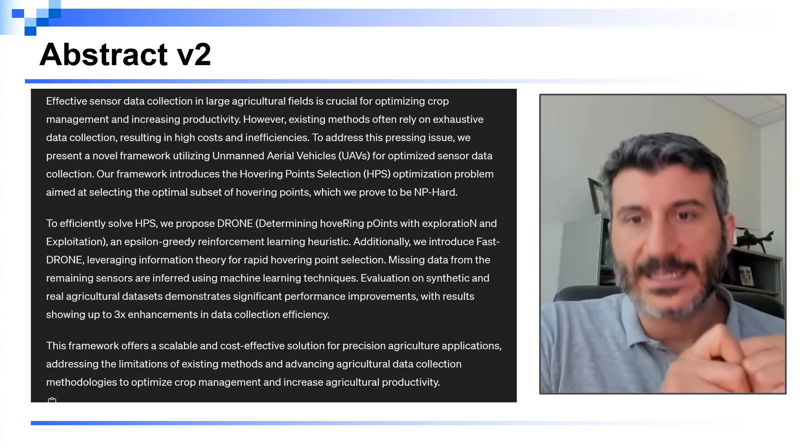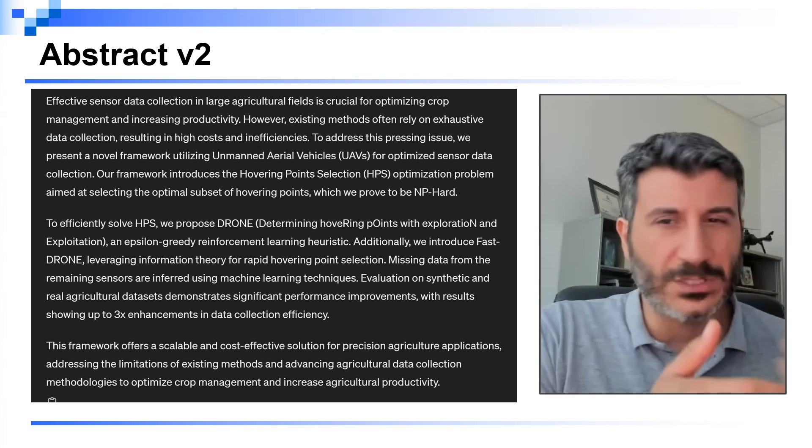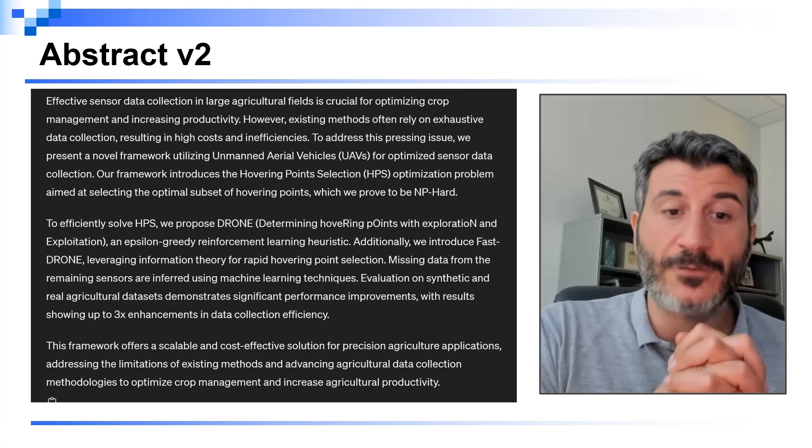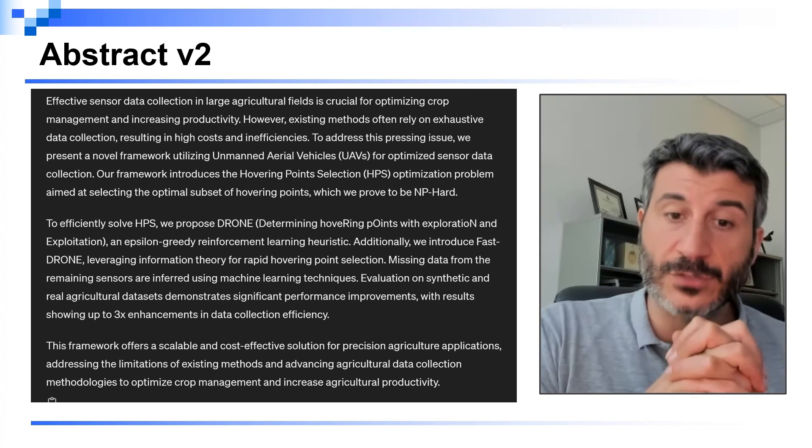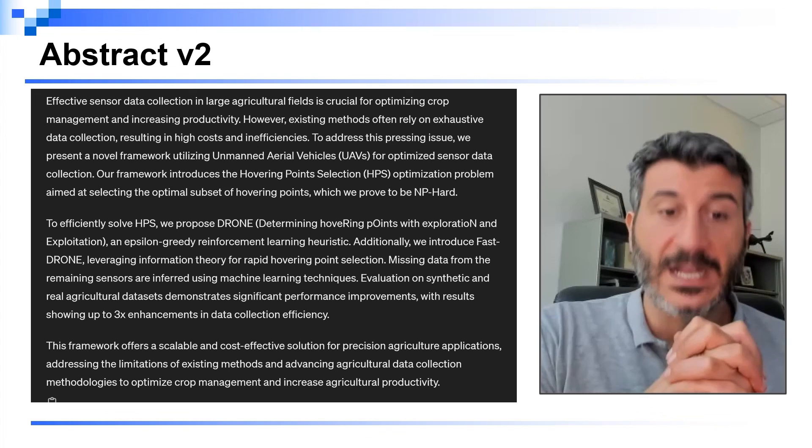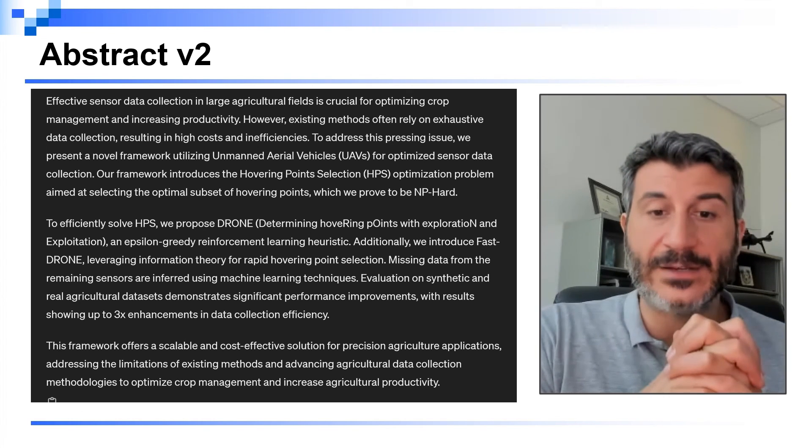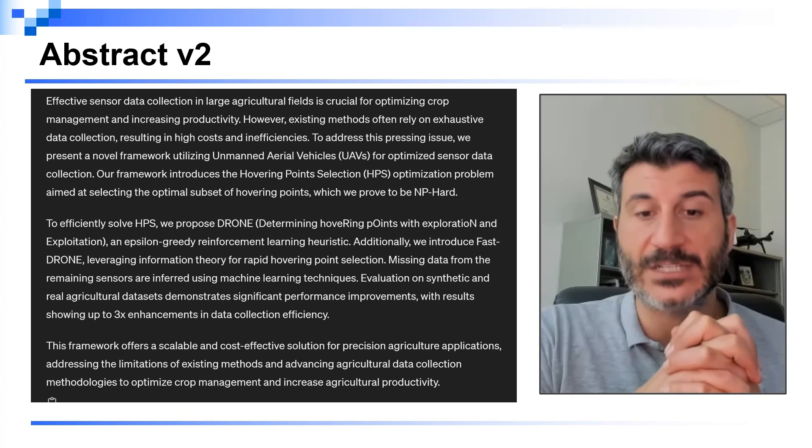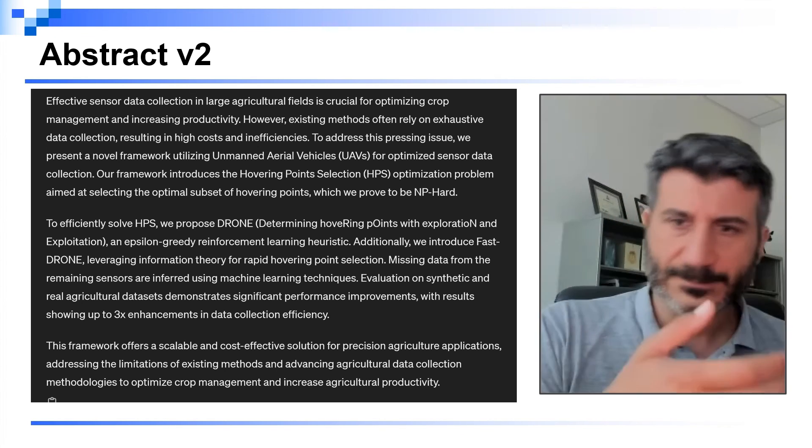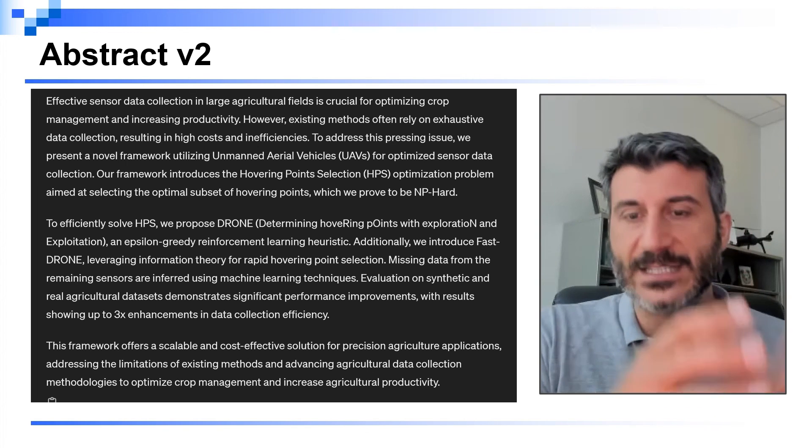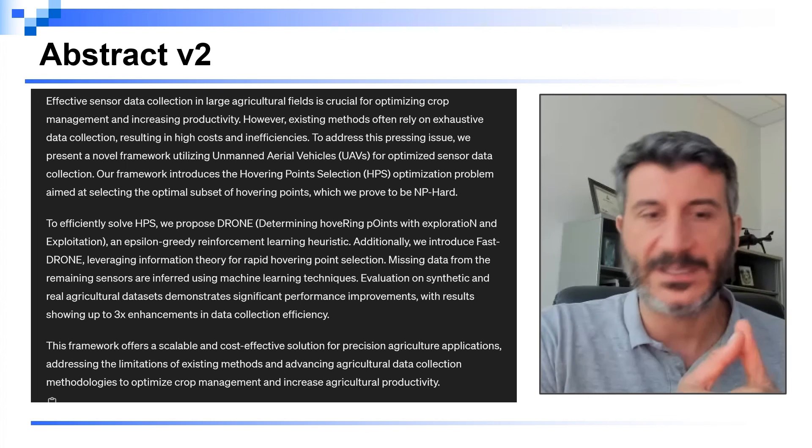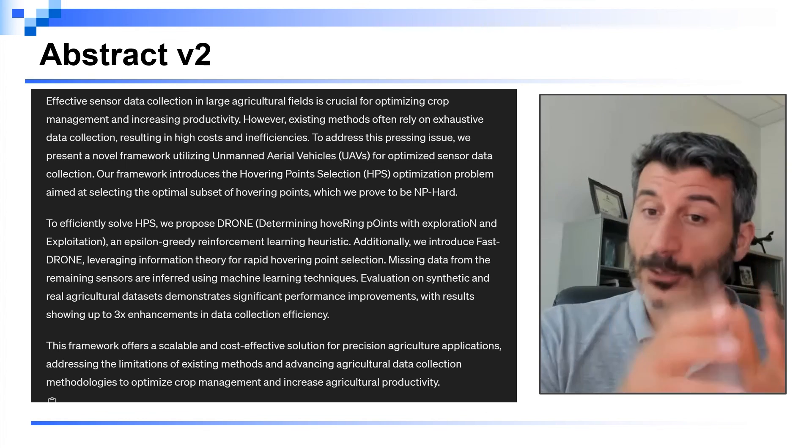ChatGPT provides another small paragraph that is optional. Often, I do not see it in papers, but if you want, you can keep it or you can just remove it. And it says, this framework offers a scalable and cost-effective solution for precision agricultural applications, addressing the limitation of existing methods and advancing agricultural data collection methodologies to optimize crop management and increase agricultural productivity. This is kind of a rephrase and summarization of why this problem is important and why what we propose is important. It's not necessary to keep it there. You can remove it, especially if you have limitations in the number of words that you can use in the abstract.